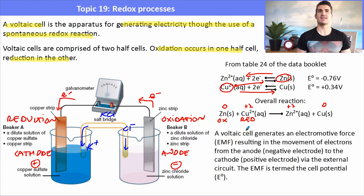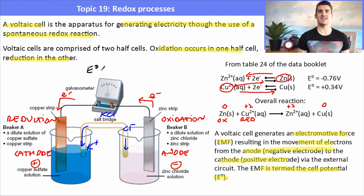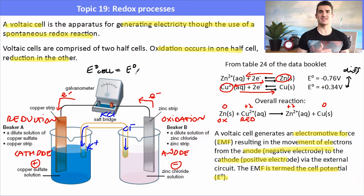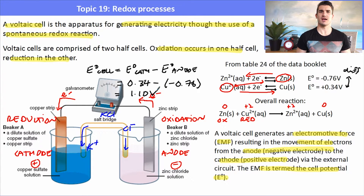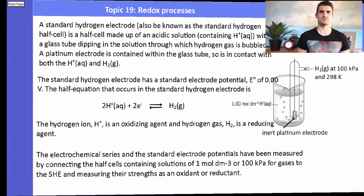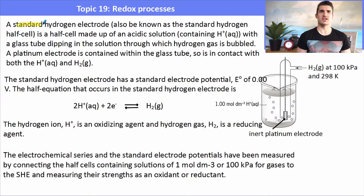A voltaic cell generates an EMF — electromotive force — which results in the movement of electrons from the anode to the cathode. The EMF is termed the cell potential, or the E° value, and represents the maximum voltage we can generate from the two half cells. The formula is: E°cell = E°cathode − E°anode. For the copper-zinc cell, E°cathode = +0.34 V and E°anode = −0.76 V, giving a maximum EMF of 1.10 V.